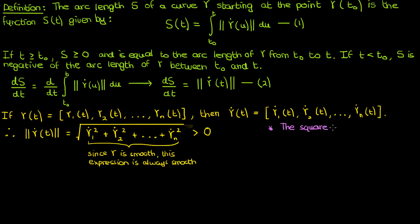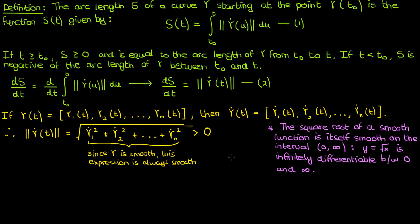Finally, the square root of a smooth function is itself smooth if the square root function lies on the open interval between 0 and infinity. You can actually prove this to yourself by taking successive derivatives of a function like y equals square root of x. This function will be infinitely differentiable as long as we're looking between 0 and infinity. Now since the term inside the square root is a sum of squares and since the magnitude of the derivative of γ is always positive, we can conclude that the expression in our square root lies between 0 and infinity. Since the expression in our square root lies between 0 and infinity, the square root function overall is smooth.